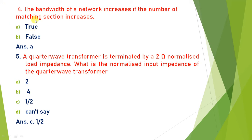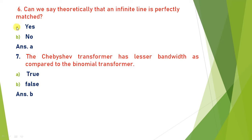Next: a quarter wave transformer is terminated by a normalized load of 2 ohm. What is the normalized input impedance? The normalized input impedance equals Z0² / ZL. With Z0 = 1 (normalized), that gives 1/2. So the answer is (c), normalized input impedance = 1/2.